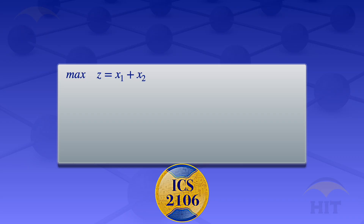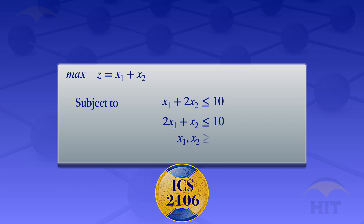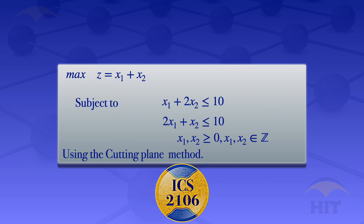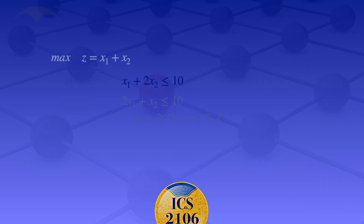In this video, I'm going to look at the problem: maximize z equals x1 plus x2, subject to the constraints x1 plus 2x2 less than or equals to 10, 2x1 plus x2 less than or equals to 10, x1 and x2 greater than or equals to 0, and x1 and x2 being integers. I'm going to solve this integer programming problem using the cutting plane method.